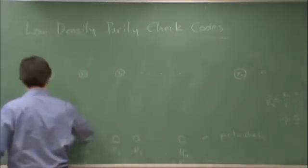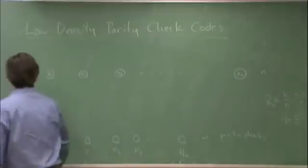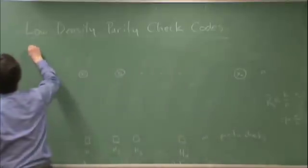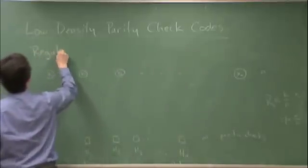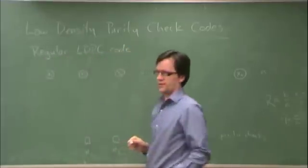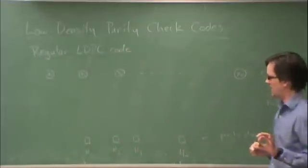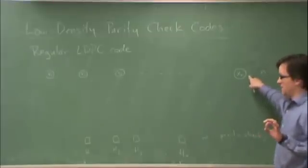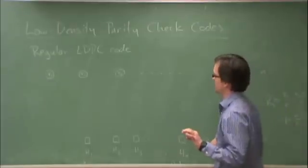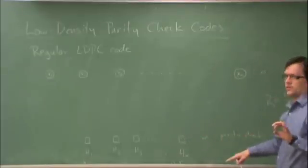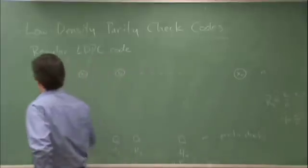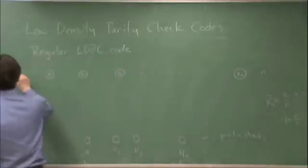Now we're going to specify this factor graph as a regular LDPC code. What that means is that the degree of each variable node is constant, and the degree of each check node is constant. Degree, if you're unfamiliar with graph terminology, is the number of edges that terminate at each vertex. The degree of each variable node is equal to DV.